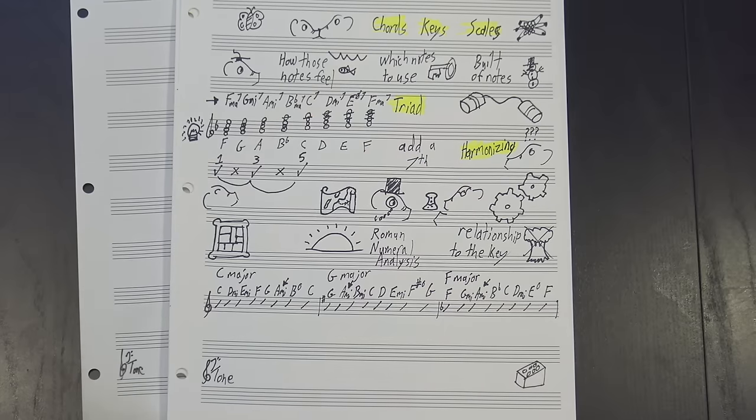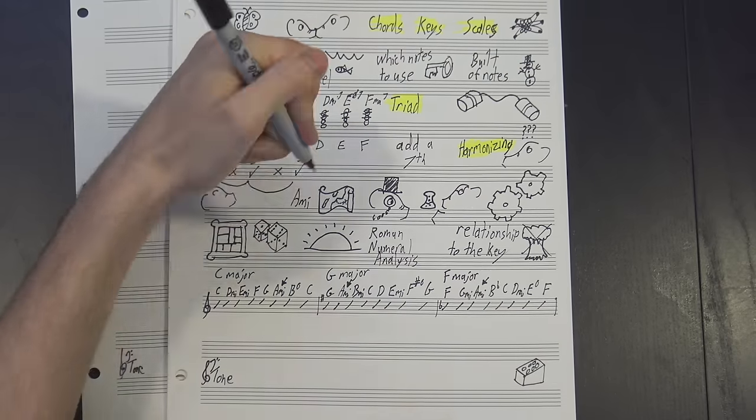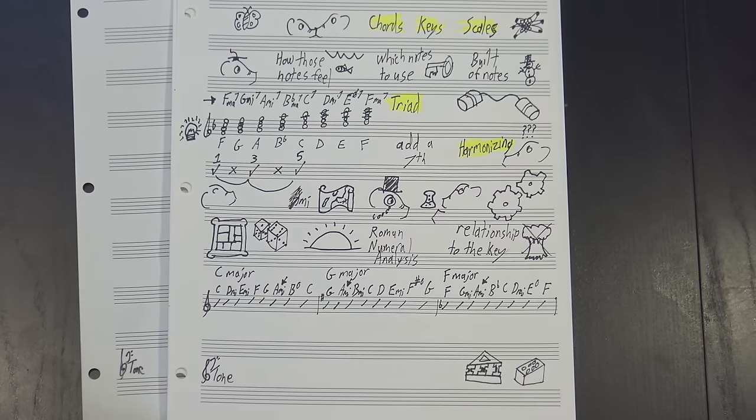That's where Roman numeral analysis comes in, and it's as simple as it is game-changing. All you have to do is take the chord symbol and replace the note name with the Roman numeral representing the scale degree it's built on.